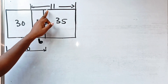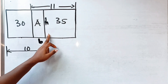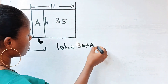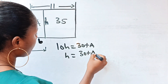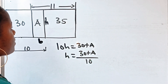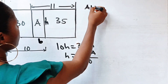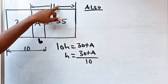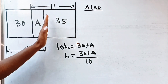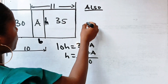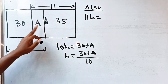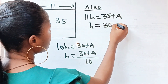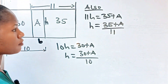If we consider this particular rectangle, the area should be the height h times 10, so 10h equals 30 plus A, which means h equals (30 plus A) divided by 10. Also, considering the other side with length 11, we have 11h equals 35 plus A, so h equals (35 plus A) divided by 11.